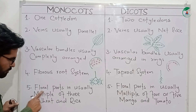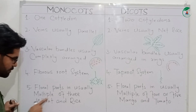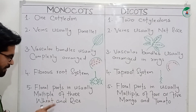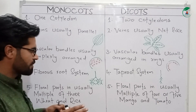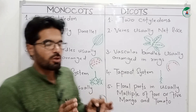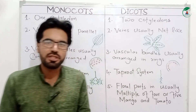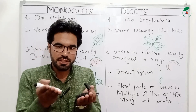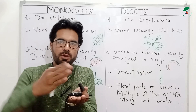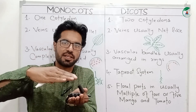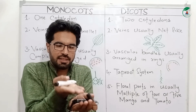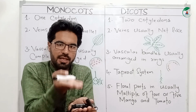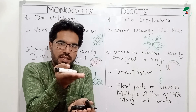Floral parts are usually multiples of three. If it is a monocot, it will produce a flower with parts in multiples of three.